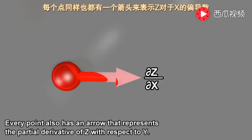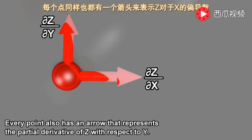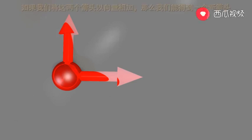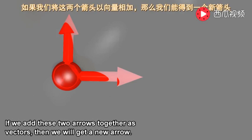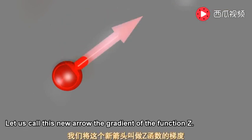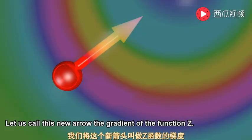Every point also has an arrow that represents the partial derivative of z with respect to y. If we add these two arrows together as vectors, then we will get a new arrow. Let's call this new arrow the gradient of the function z.